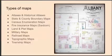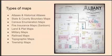Here are the types of maps you can use for genealogy: atlases and historical atlases, state and county boundary maps, census enumeration maps, fire insurance maps, land and plat maps, military maps, railroad maps, topographic maps, and township maps. So let's look at some of these.